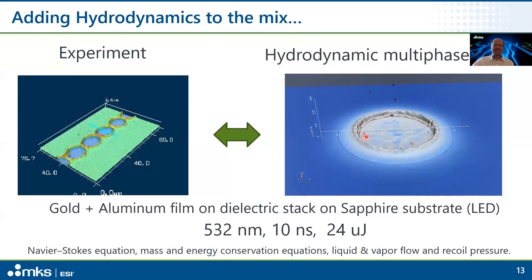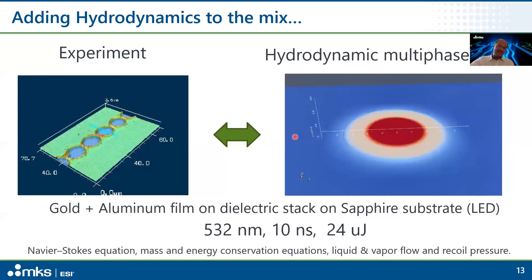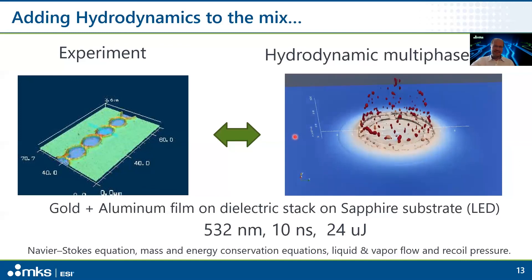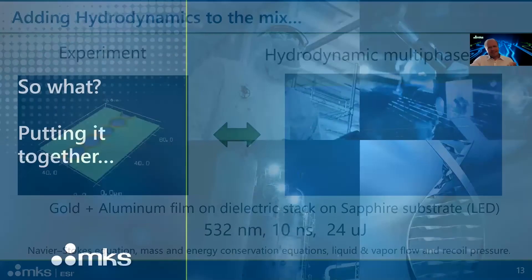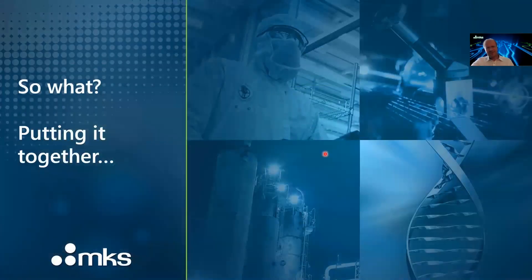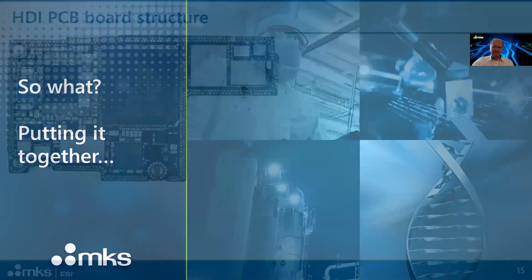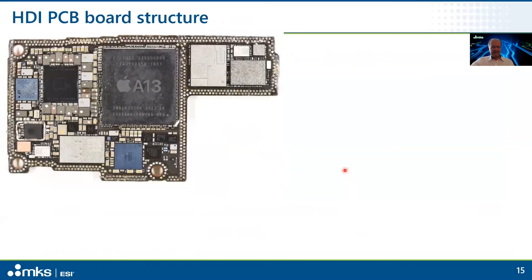This now really provides an insight into how clean a process is and what's going on. There's a lot more modeling we do at MKS, but for today's example this is sufficient. So what's the point — why go through this effort? Let's put it together. Here we have the example of a recent iPhone's high-density interconnect PCB board, and you can see it's chock full of components. All of these components need to talk to each other.